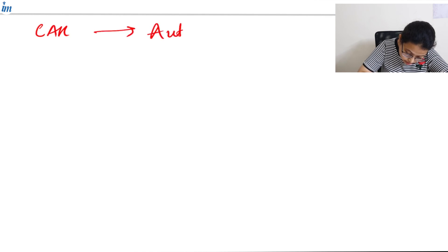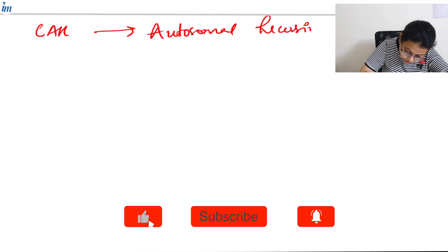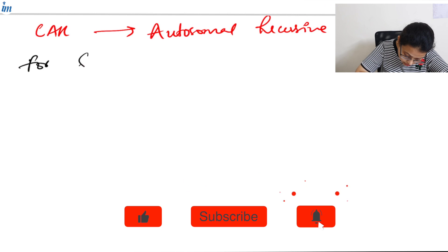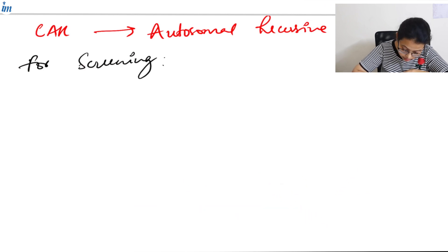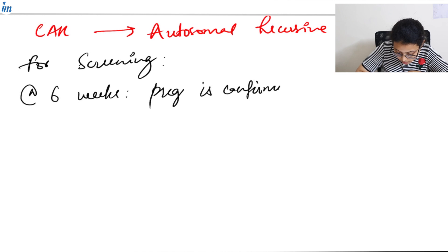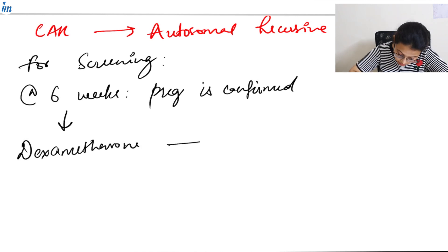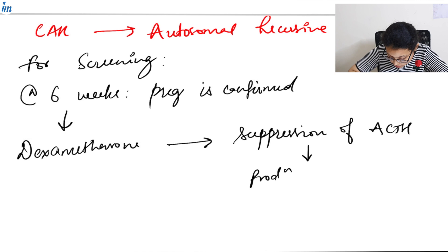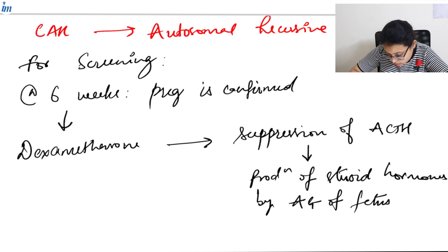CAH is an autosomal recessive disorder. For screening, at six weeks when pregnancy is confirmed, we start giving dexamethasone to the patient. It's a potent steroid that causes suppression of ACTH, resulting in decreased production of steroid hormones by the fetus.